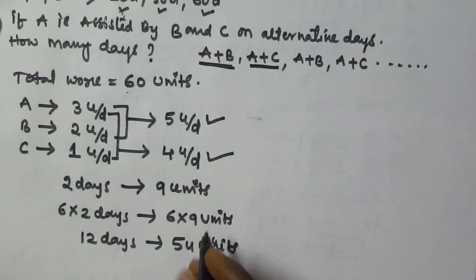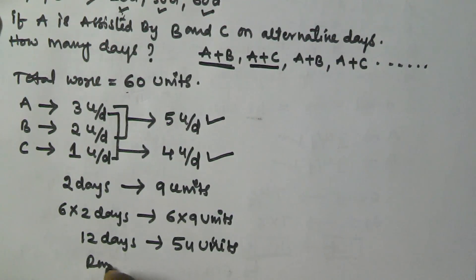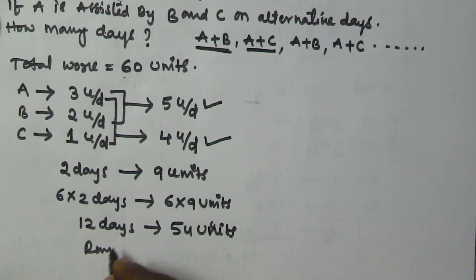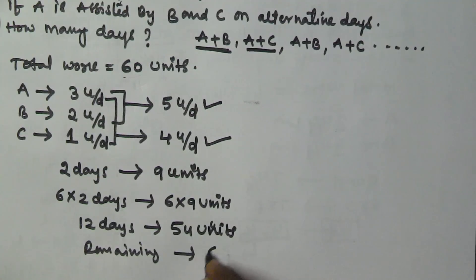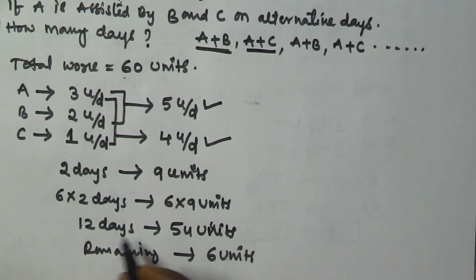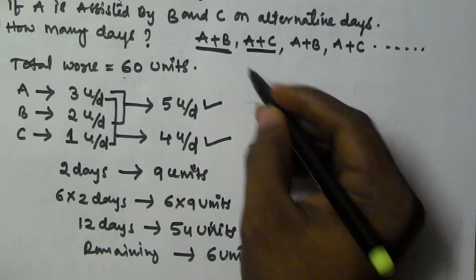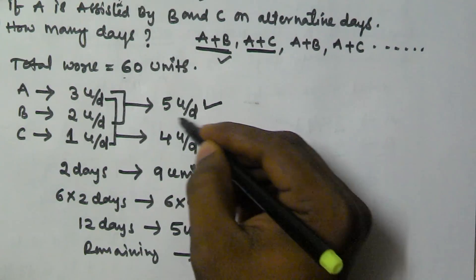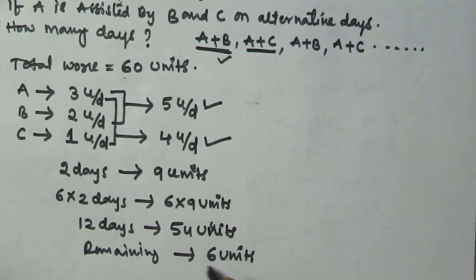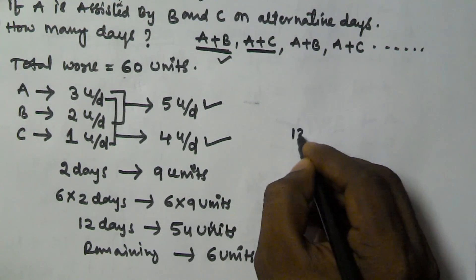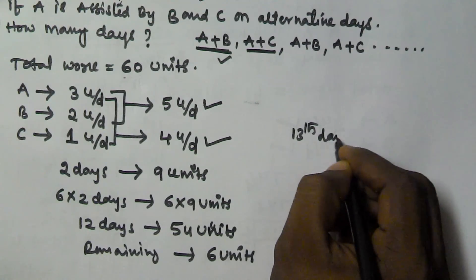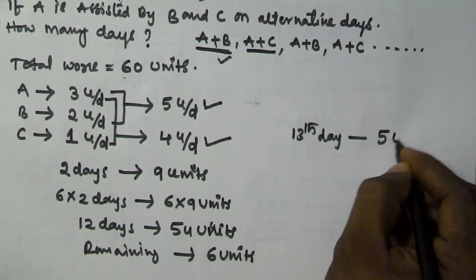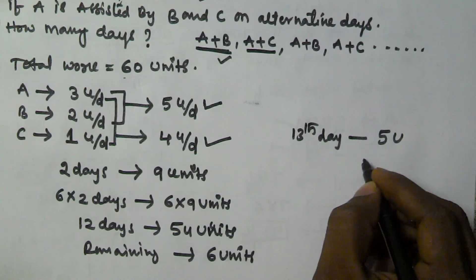Total is 60 units, and 54 units are finished in 12 days. So the remaining units are 6 units. After 12 days, on the 13th day A and B will work, and A and B will finish 5 units. Remaining units are 6, so on the 13th day they finish 5 units, leaving 1 unit remaining.